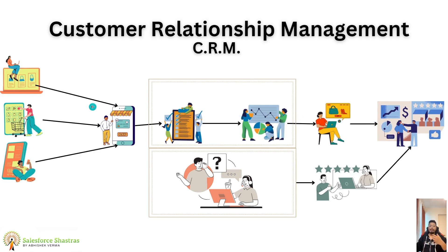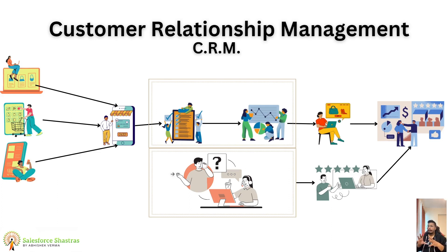A second scenario: when a customer wants to replace or return a particular product, he will call customer care. Immediately, in one or two minutes, the representative gets all the information about the customer — what he purchased in the past and which product he is calling about. Fast service, fast delivery, and good products help a business grow more. This is all happening in CRM in a digital way — maintaining the customer relationship digitally. This is all about customer relationship management.